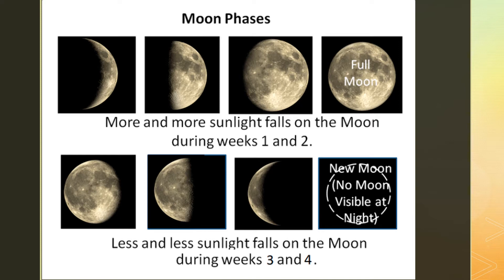We call those changing shapes moon phases. During weeks one and two of moon phases, more and more of the moon is illuminated by sunlight until the entire face of the moon is lit. This is called the full moon.